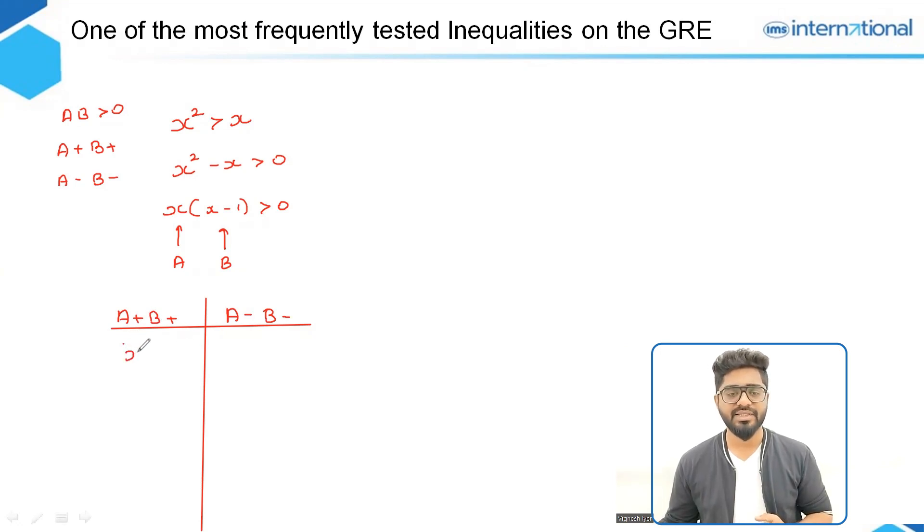So we can write this as X is greater than 0 and X minus 1 is also greater than 0. On the right, we can write X is less than 0 and X minus 1 is also less than 0.